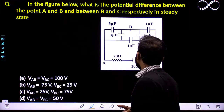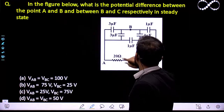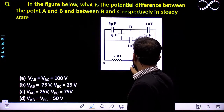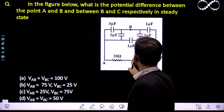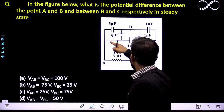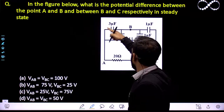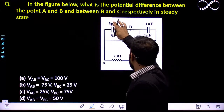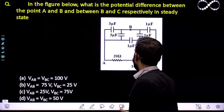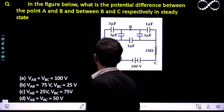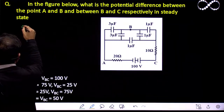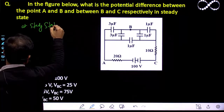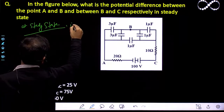In the steady state, all the capacitors will be fully charged. When all the capacitors are fully charged, there will be no current in the circuit because this whole part is fully charged. The whole part can be removed, and if you remove this whole part then there will be no closed circuit for the flow of current. So at steady state, no current will flow — I will become 0.